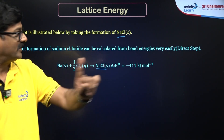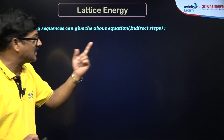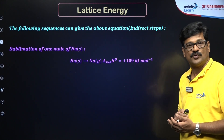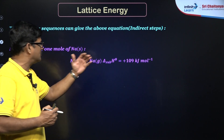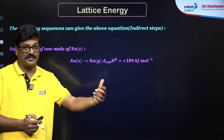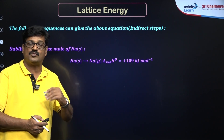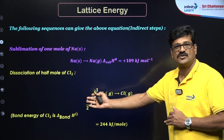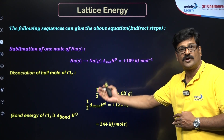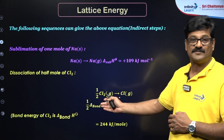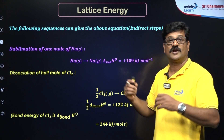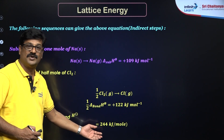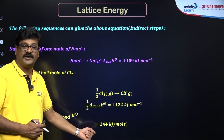This is called enthalpy of formation in a single step. Now the indirect steps: first, sublimation of one mole of sodium — sodium solid is converted to sodium gas, which is called enthalpy of sublimation or enthalpy of atomization, requiring plus 109 kJ. Also, dissociation of chlorine: half a mole of chlorine molecule dissociates to give one mole of chlorine atoms, called enthalpy of dissociation or atomization, requiring bond dissociation energy divided by 2, which is 244 kJ per mole.